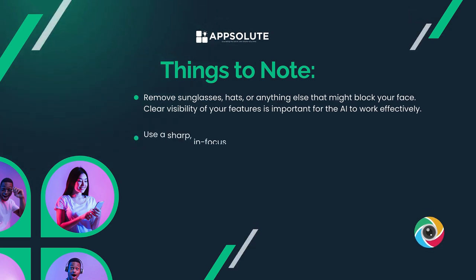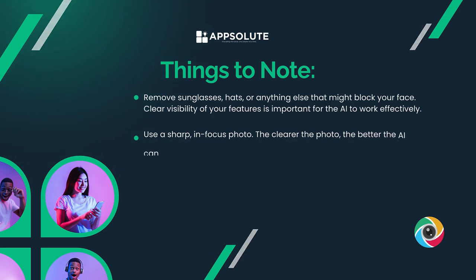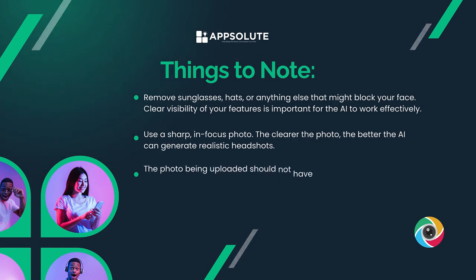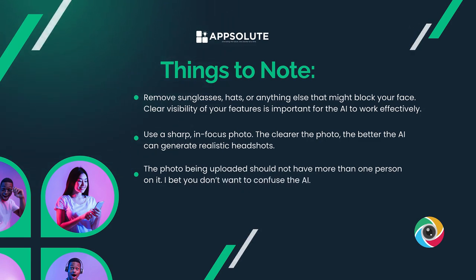Sixth, use a sharp and focused photo. The clearer the photo, the better the AI can generate realistic headshots. Seventh, the photo being uploaded should not have more than one person in it — you don't want to confuse the AI. The major thing to remember is to make it easy for the AI model to understand your features. Once the image has been selected based on these standards, we'll proceed to use Hyperbooth for an image-to-image generation.